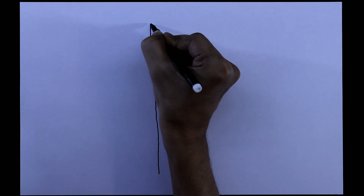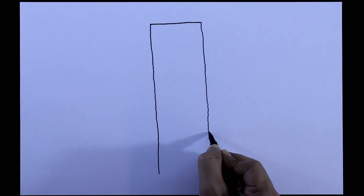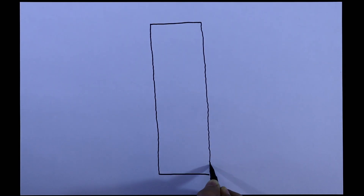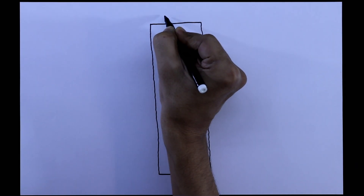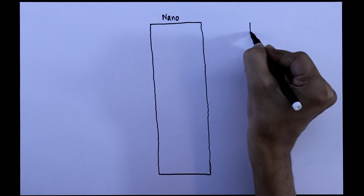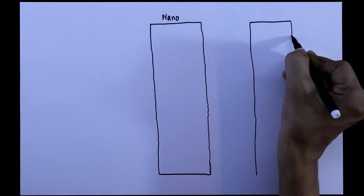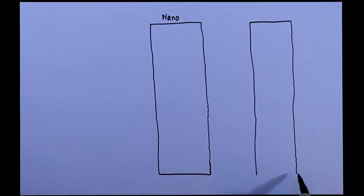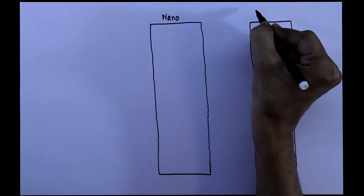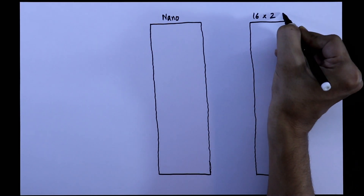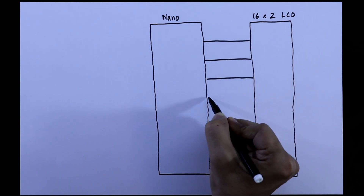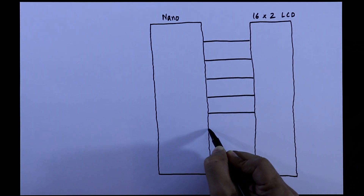To control the brightness, we are going to use Arduino Nano. And to see the brightness level, we are going to use an LCD display. First, we will connect both of these.